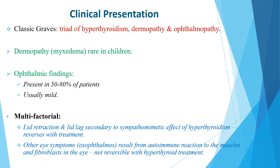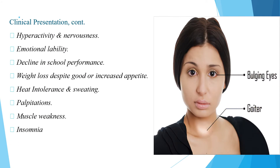The ophthalmologic findings of Graves disease are multifactorial. Lid retraction and lid lag are secondary to the sympathetic effect of hyperthyroidism and reverse with treatment. Other eye symptoms such as exophthalmos result from autoimmune reaction to the muscles and fibroblasts in the eye, which is not reversible with hyperthyroid treatment.